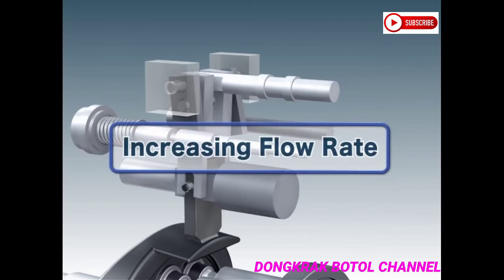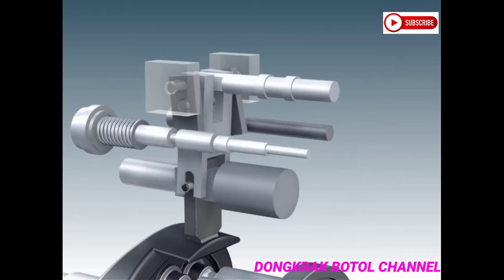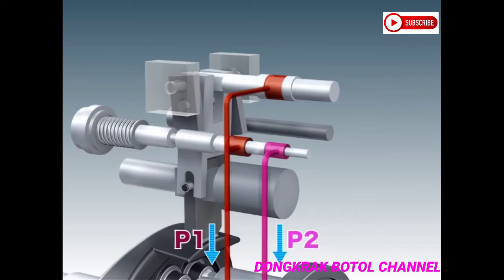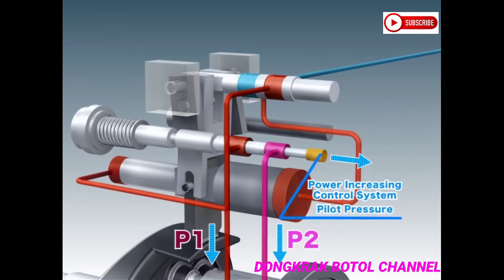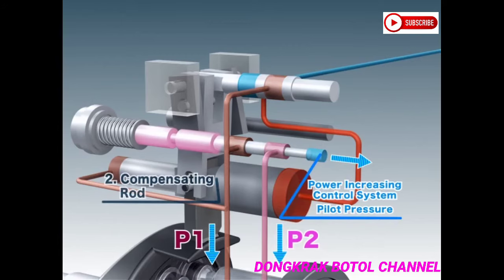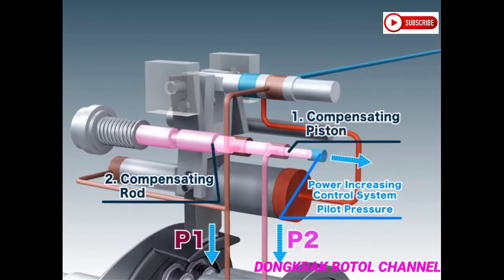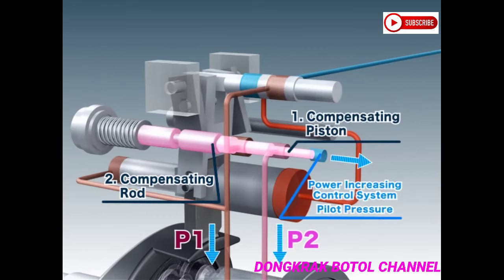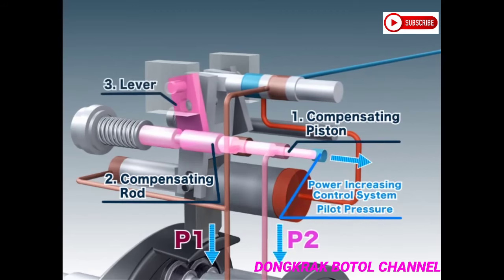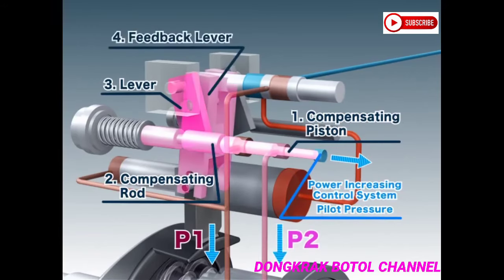Next, we will explain how the regulator increases the flow rate. When the delivery pressure of the pump, P1, or of a companion pump, P2, decreases, or when the pilot pressure is released by the power increasing control system, the compensation rod and piston are pushed back by their springs. As the compensating rod moves, the lever rotates, moving the feedback lever, which in turn moves the spool.